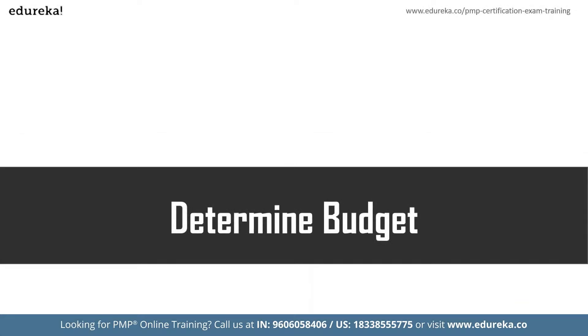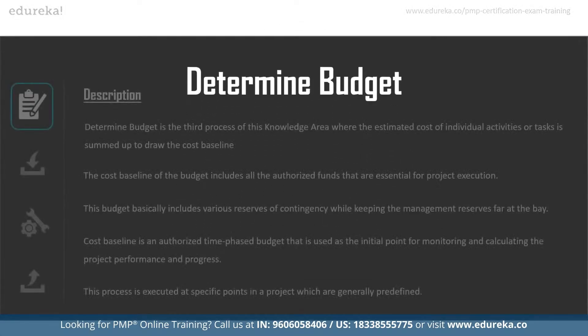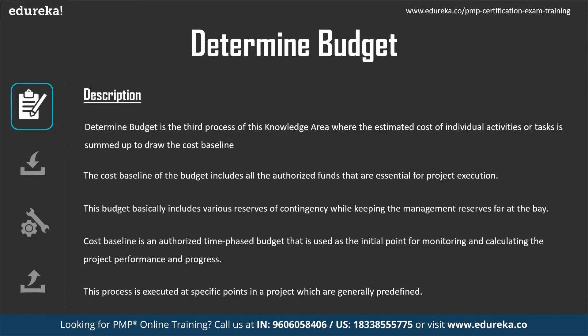The next process is determine budget. Determine budget is the process of aggregating the estimated cost of individual activities or work packages and establishing the authorized cost baseline. It is the third process in the cost management knowledge area. This involves summing up activities and tasks to identify the cost baseline. The cost baseline includes all authorized funds essential for project execution, including contingency reserves related to identified risks.